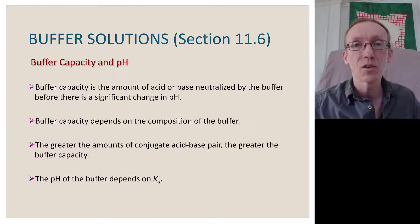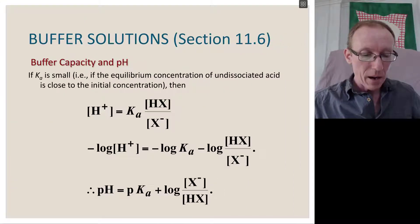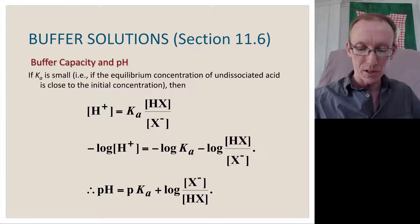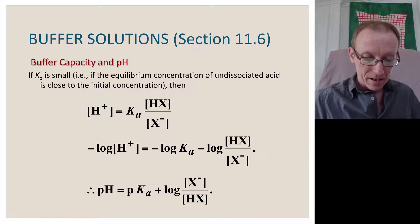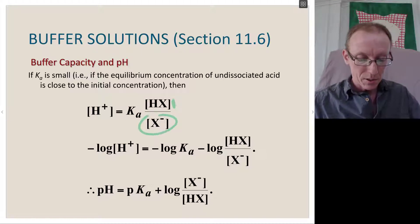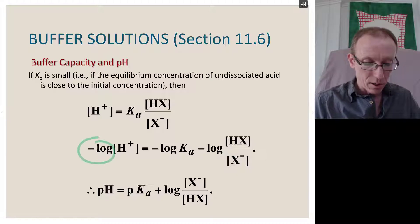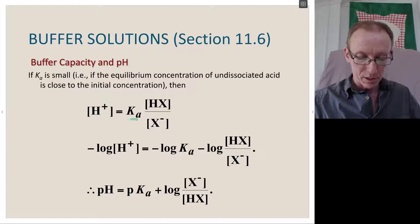The pH of the buffer depends on the Ka of the species we're using. If the Ka is small, if the equilibrium concentration of unassociated acid is close to the initial concentration, then the proton concentration equals Ka times the acid we started with over the conjugate base. Therefore, the negative log of that proton concentration is equal to the negative log of both those terms, negative log of the Ka minus the negative log of those two concentrations.